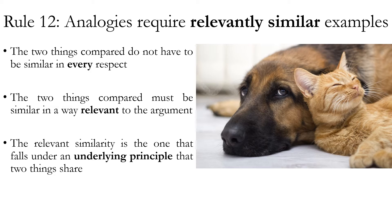In order to be effective, arguments by analogy require relevantly similar examples. The two things being compared do not have to be similar in every respect — only identical things share all their properties, and identity is not an analogy. However, the two things compared must be similar in a way relevant to the argument. Relevance depends on what the conclusion is; the relevant similarity is one that falls under some underlying principle that the two things share that is relevant to the conclusion.